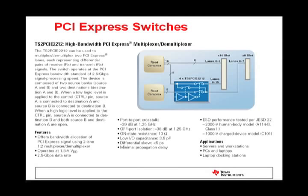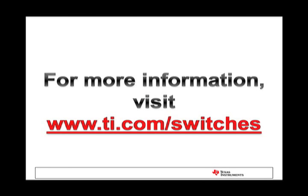The TS2PCIE2212 is an example of a PCI Express switch. This switch is designed to either route one PCIe data line between two possible data destinations, or two PCIe data lines to one destination. Each differential pair of receive and transmit signals can be routed through a single PCB with low skew, operating at a bandwidth speed of 2.5 Gbps. Thank you for listening to the online training module for analog switch solutions here at Texas Instruments. For more information on our latest analog switches, please visit www.ti.com/switches.